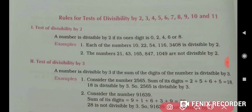Numbers ending in 0, 2, 4, 6, or 8 are divisible by 2. Numbers like 21 — the ones digit is 1 — are not divisible by 2. Similarly, ones digits of 3, 5, 7, or 9 are not divisible by 2. This is the way we can check divisibility by 2.